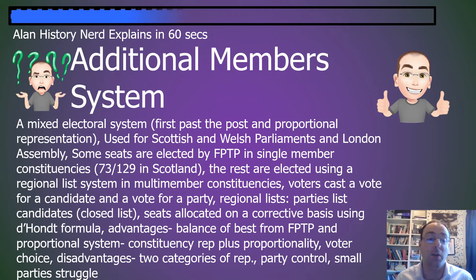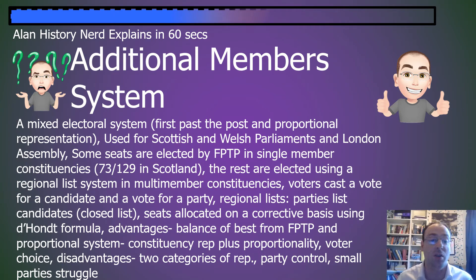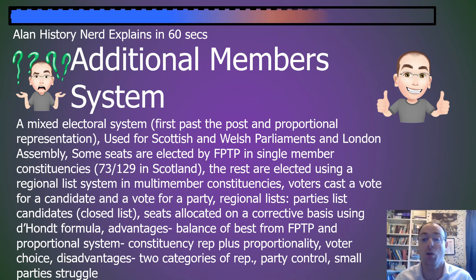Voters cast a vote for a candidate in their individual constituency and then vote for a party on their regional lists. The regional lists are controlled by the parties, who decide the order of the candidates placed on them — these are called closed lists. Seats are allocated on a corrective basis using the d'Hondt formula to ensure some proportionality.